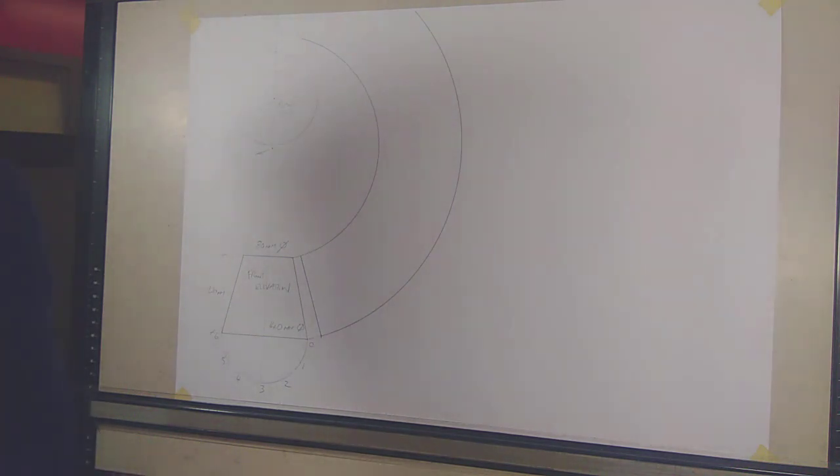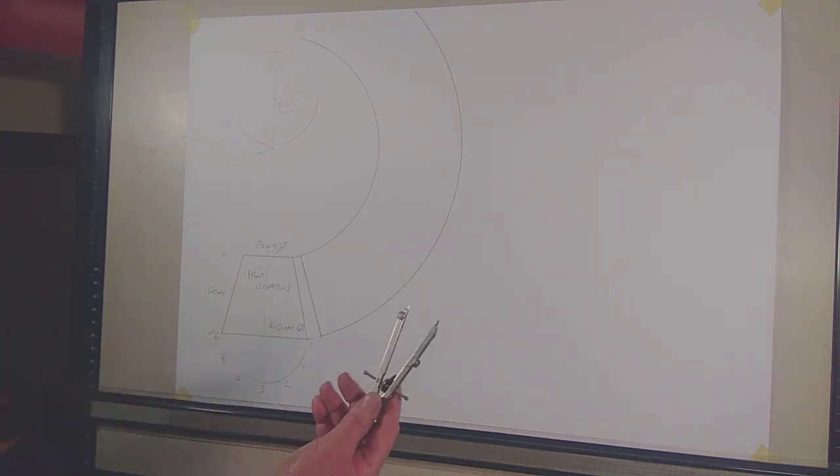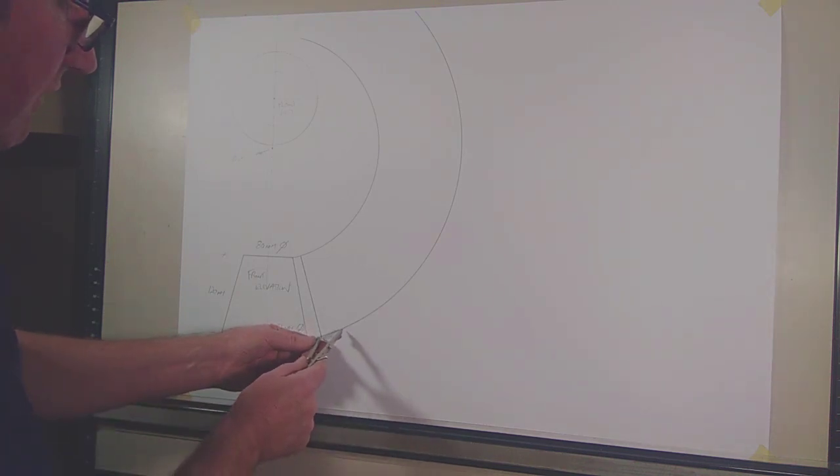Now what we need to do from that position is take one of these incremental lengths. I'll do it from the center back to 2, and I need to make sure that it steps off in there exactly 3 times back to the 0, which it does. So now that I've got that length, I can step off around here.